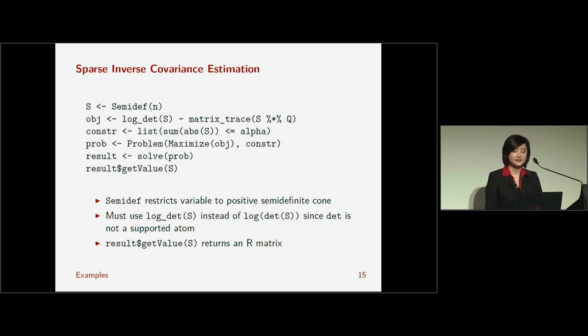The third line is my constraints. That's pretty straightforward. Alpha is a parameter that I set, so I can actually run this in a loop, which I'll show later, and change alpha and do some kind of cross-validation. Then, my problem is to maximize this objective function with this constraint, and then I solve and get my S back, value back.